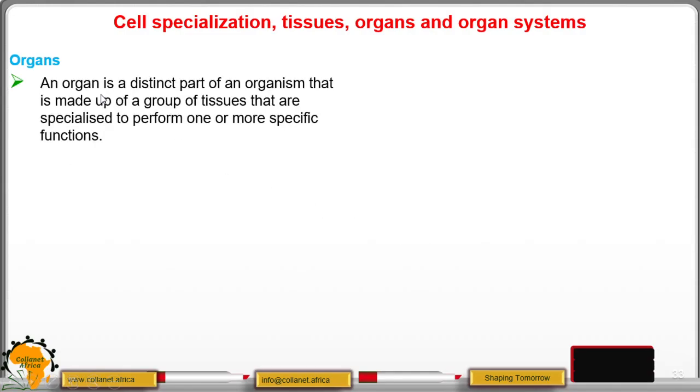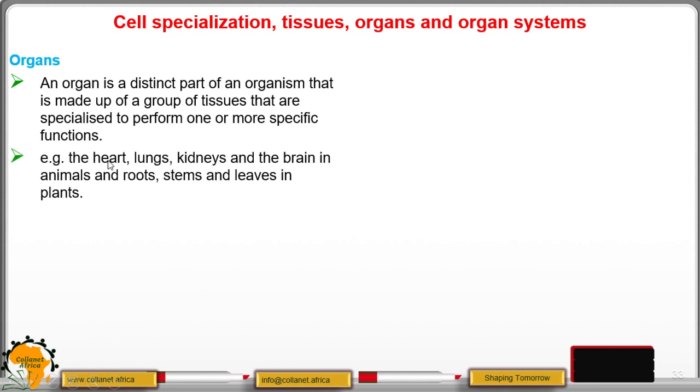We move to the organs. And an organ is a distinct part of organism made up of a group of tissues specialized to perform one or more specific functions. For example, the heart, lungs, kidneys, and the brain in mammals. For plants, we have the roots, stems, leaves, and even fruits.